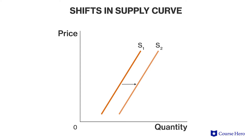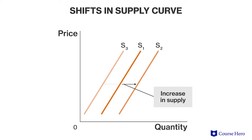Prices of an item are responsible for changing the quantity supplied of that item, but there are a variety of factors that will change the entire supply for an item. The supply curve shifts to the right when supply increases, or to the left when it decreases. When supply shifts to the right, sellers are willing to provide larger quantities of the product at every price point. Prices are not the cause of the change in supply. When supply shifts left, fewer units will be supplied at each price.